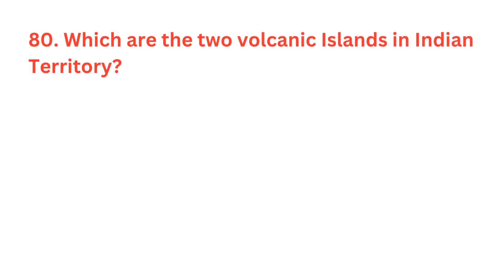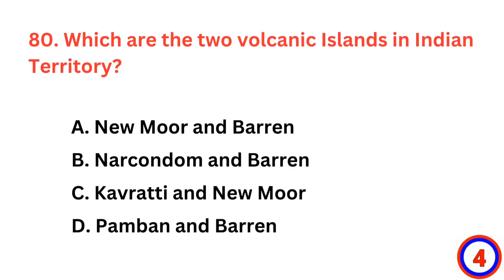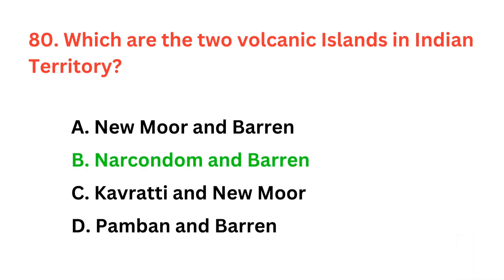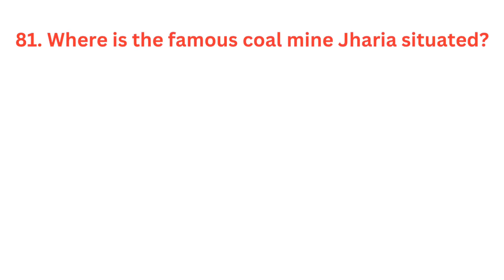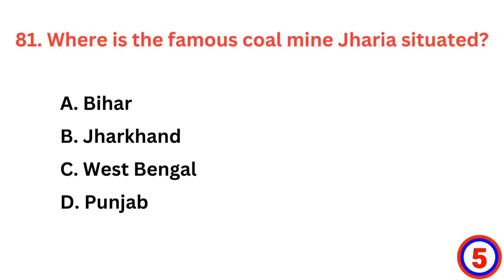Which are the two volcanic islands in Indian territory? The correct answer is option B, Narcondam and Barren. Where is the famous coal mine Jharia situated? The correct answer is option B, Jharkhand.